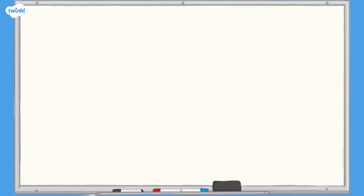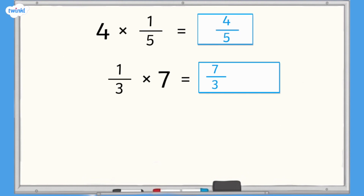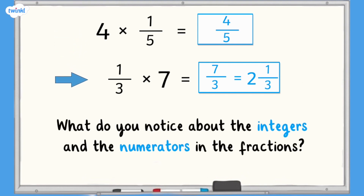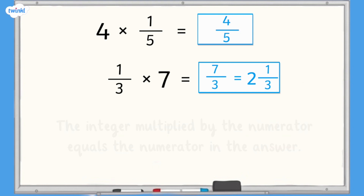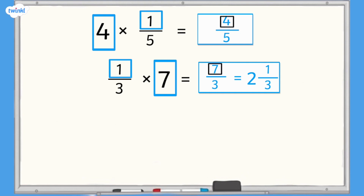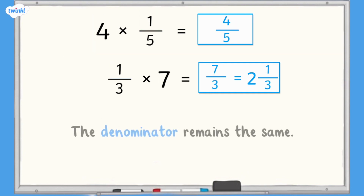Let's have a recap of the two calculations we've completed so far: 4 multiplied by 1 fifth equals 4 fifths, and 1 third multiplied by 7 equals 7 thirds which equals 2 and 1 third. What do you notice about the integers and the numerators in the fractions? That's right — the integer multiplied by the numerator equals the numerator in the answer. So 4 multiplied by 1 equals 4 and 1 multiplied by 7 equals 7. The denominator remains the same.